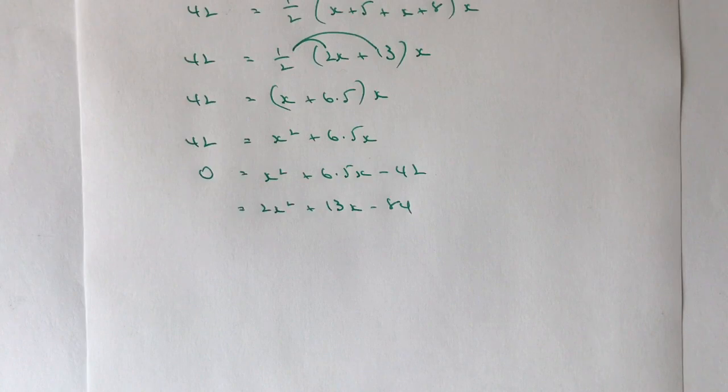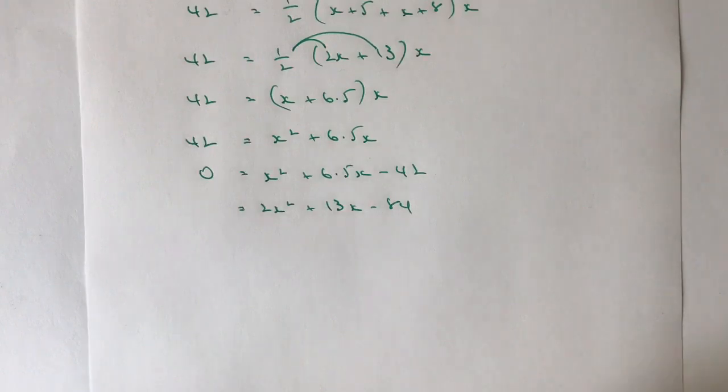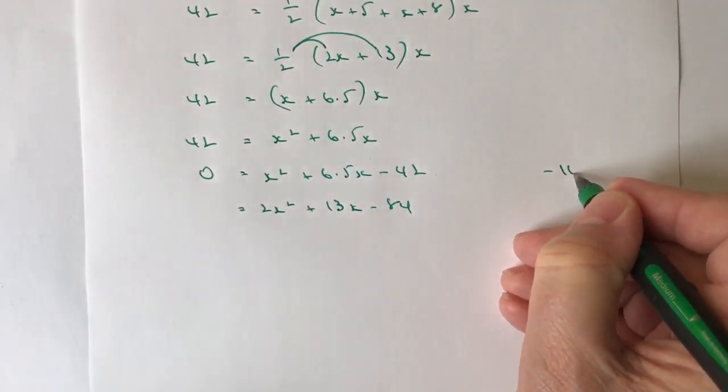What I'm going to do, however, is I'm going to say, well, I think I can solve this by using a different method. Which is where I say 2 times minus 84 is going to be minus 168.